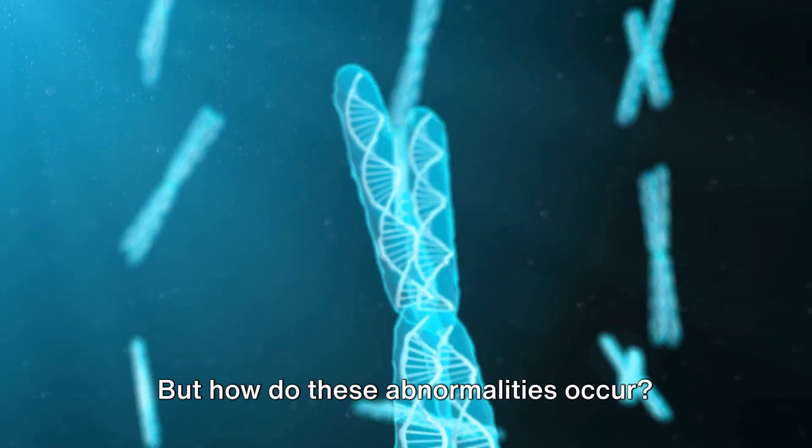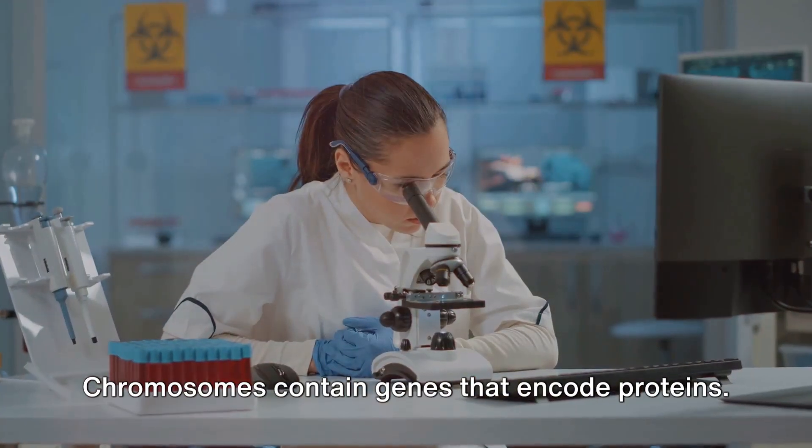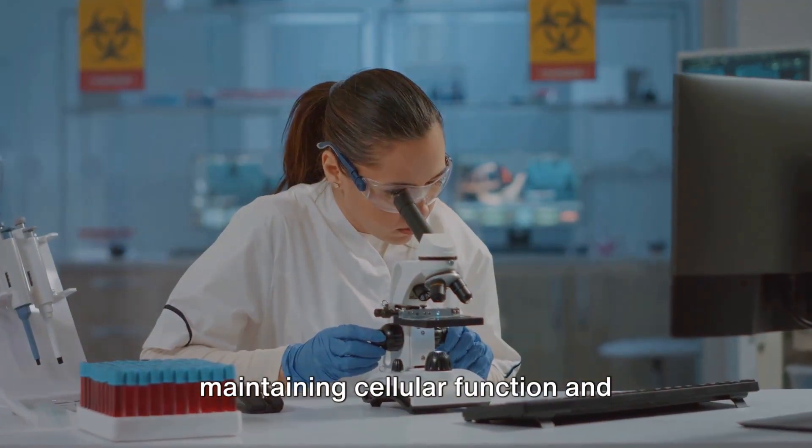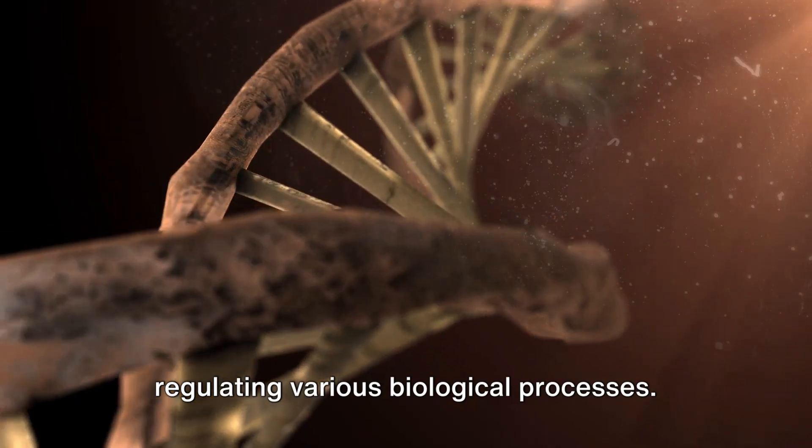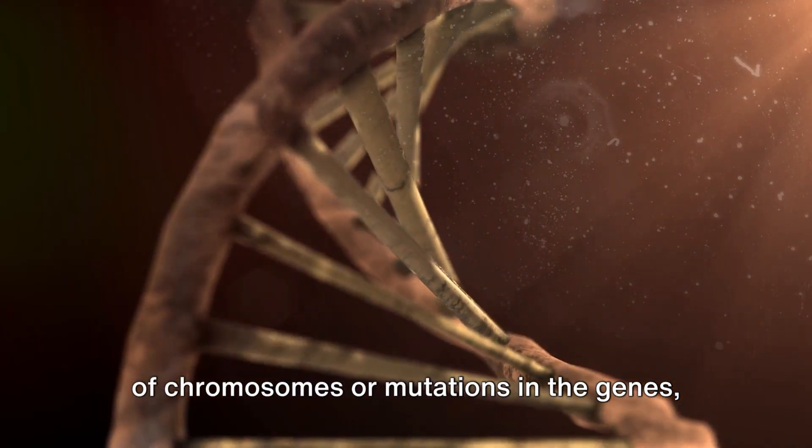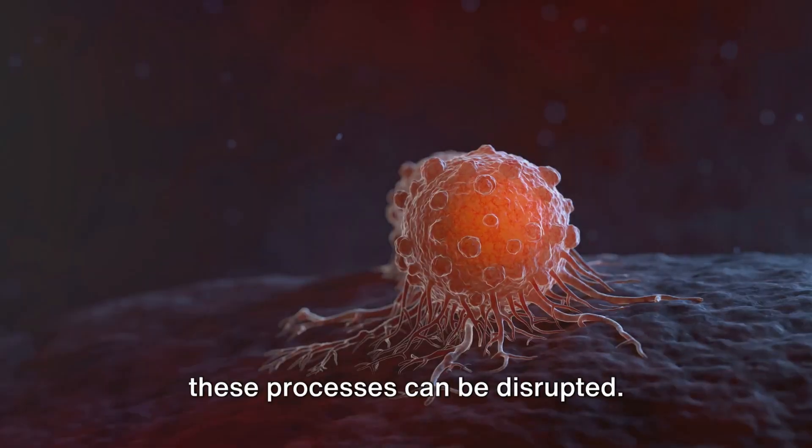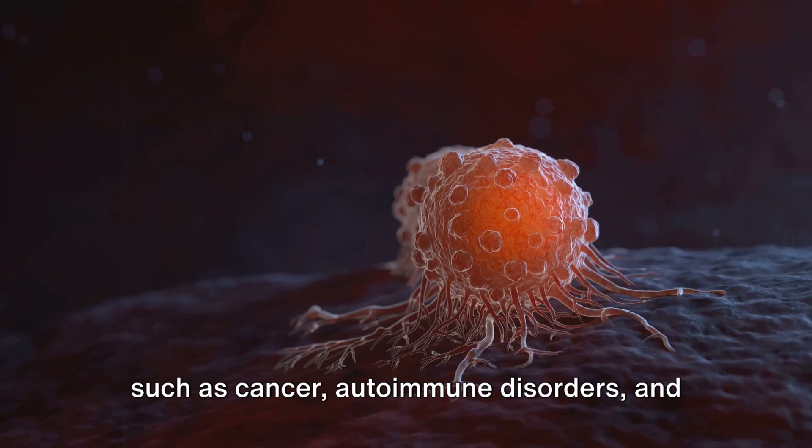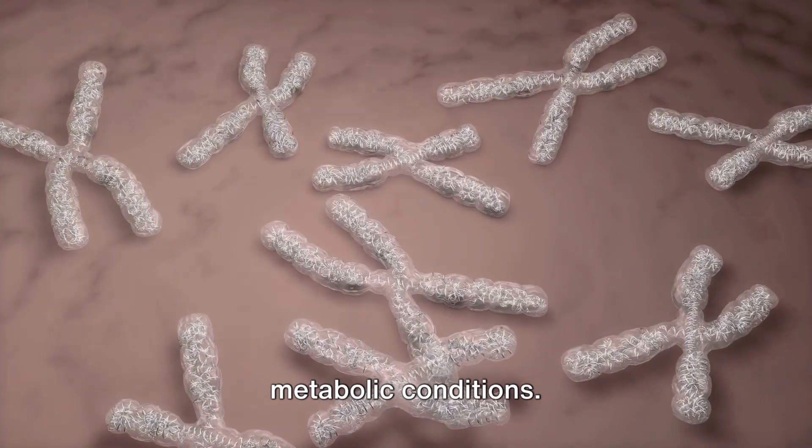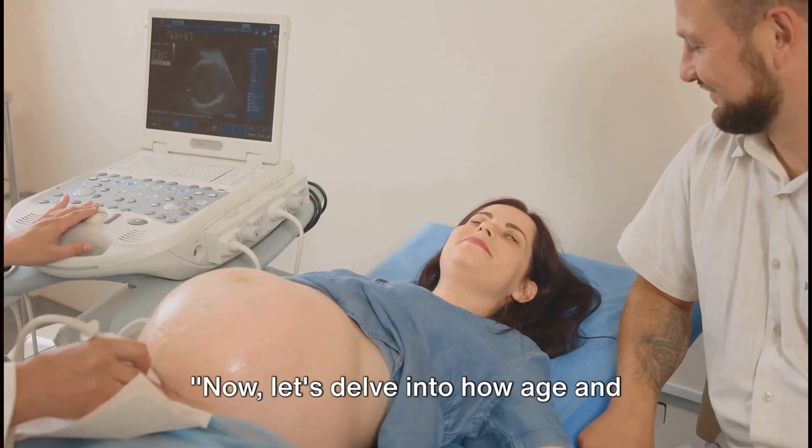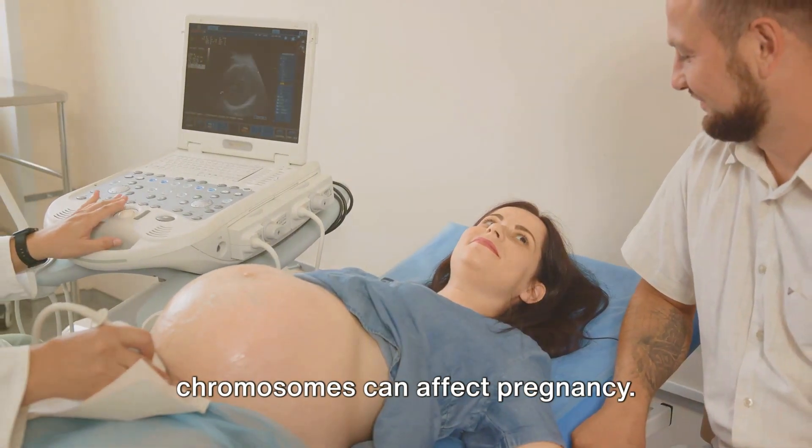But how do these abnormalities occur? Chromosomes contain genes that encode proteins. These proteins are involved in maintaining cellular function and regulating various biological processes. When there are changes in the structure of chromosomes or mutations in the genes, these processes can be disrupted. This can lead to a variety of diseases such as cancer, autoimmune disorders, and metabolic conditions. So, chromosomes play a significant role in our health and well-being. Now, let's delve into how age and chromosomes can affect pregnancy.